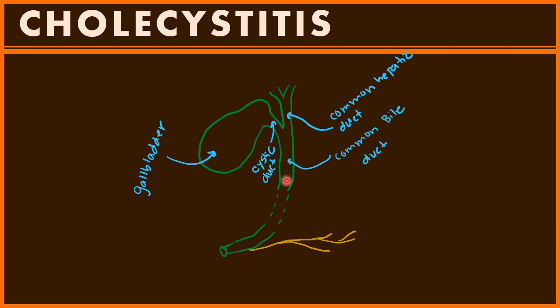The common bile duct continues to go down and then combines with the pancreatic duct. Once the pancreatic duct and the common bile duct come together, the bile comes out through the sphincter of Oddi.